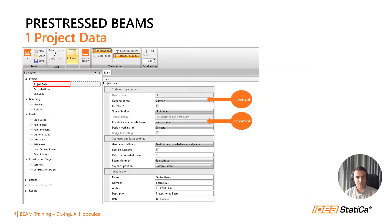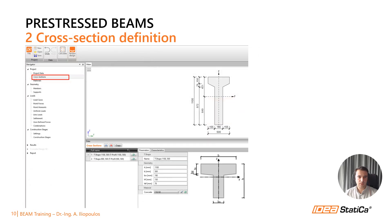In the BEAM application, on the left side we can find a navigation tree that shows the steps we have to carry out. Firstly, under project data, we can enter our details including the national annex and the type of pre-stressing — whether it is pre- or post-tensioning. In the next step, we have to input the cross-section. We are not limited to a single cross-section; we can use different cross-sections with different reinforcement arrangements along the system.